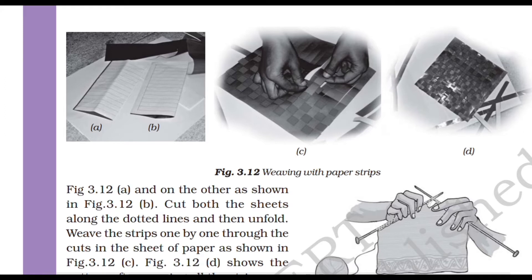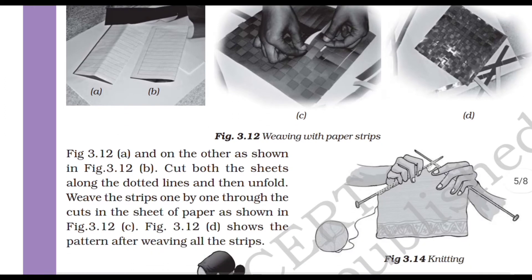Fold the colored sheets, then cut both sheets along the dotted lines and unfold them. Weave the strips one by one through the cut sheet of paper. After weaving all the strips, you will see a pattern as shown in figures C and D.